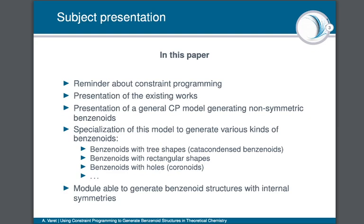In this paper we are firstly going to present a little reminder about constraint programming. Then we will present an existing algorithm able to generate all the benzenoid structures of n hexagons for a given integer n. After this, we present a general constraint programming model able to generate all the non-symmetrical benzenoids having a given number of hexagons. Then we present three blocks of variables and constraints called modules: one for benzenoids having a tree shape (cata-condensed benzenoids), one for benzenoids having a rectangular shape, and one for benzenoids with holes (coronoids). Note that we also implemented a module for benzenoids invariant by rotation and mirroring, but it will not be detailed here.